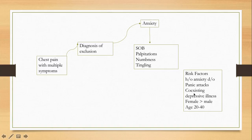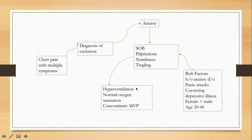Risk factors include previous history of panic attacks, post-traumatic stress disorder, depression, female sex, and younger age. On physical exam, these patients hyperventilate with totally normal oxygen saturation. Some studies have found that mitral valve prolapse can be a concomitant finding — patients with MVP are at higher risk for anxiety — but this does not mean chest pain in an MVP patient should be automatically attributed to anxiety.